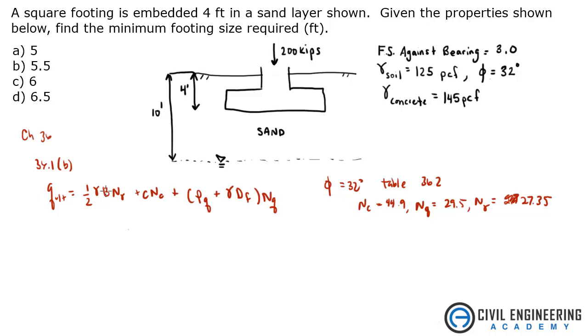We also need to use shape factors. In the paragraph underneath the equation, it says that each one of these is multiplied by a shape factor. Well, not each one. The n c and the n gamma term are multiplied by a shape factor found in table 36.4 and 36.5. And because it's a square footing, n c would be 1.25.